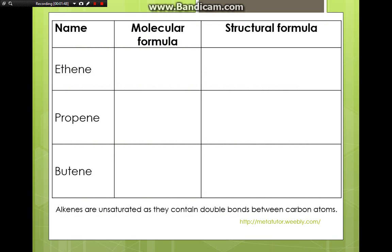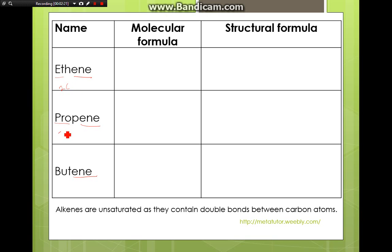Looking at the first few members of alkenes, the first thing you realize is their names end with '-ene': ethene, propene, and butene. Compared to alkanes, which have names ending with '-ane'. The ending of the name tells us they come from the alkene family. The start of the name, just like for alkanes, tells us the number of carbons: 'eth-' has two carbons, 'prop-' has three carbons, 'but-' has four carbons.